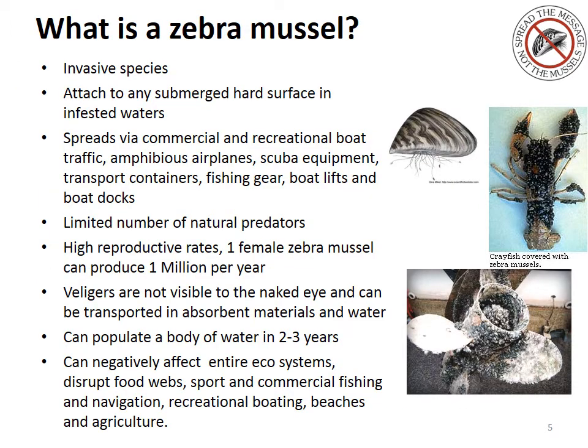What is a zebra mussel? A zebra mussel is a freshwater mussel also considered an invasive species. They attach themselves to anything submerged on a hard surface in infested waters using byssal hairs. They spread very easily, and the number one way they spread is via commercial and recreational boats that have been in infested waters.